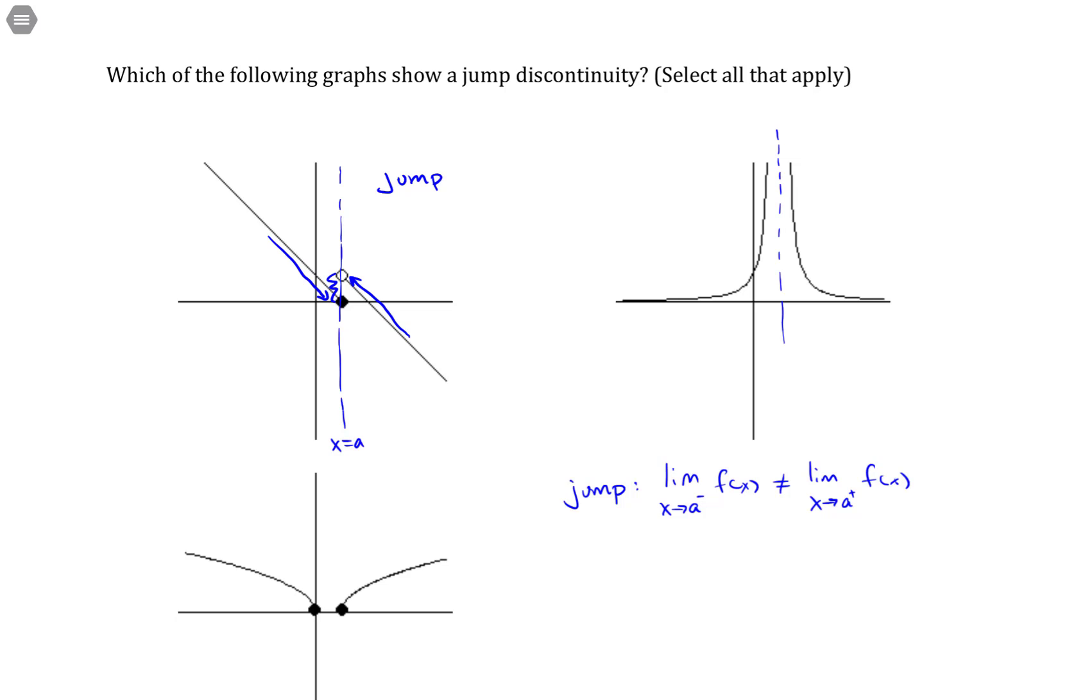And the last one here, we have a gap this way, but it's a vertical jump that we're referring to, not a horizontal jump. So the only one that possesses a jump is the one highlighted already.